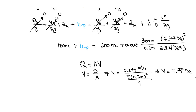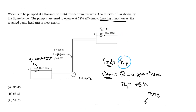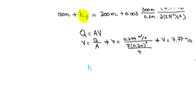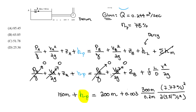A quick tip for the FE exam: once you solve the velocity in your notes, just plug it into your calculator efficiently — you don't need to be neat, you need to be fast. Now that everything has values, we solve for H_p, the required pump head. Plugging everything into the calculator, you should get approximately 63.85 meters.